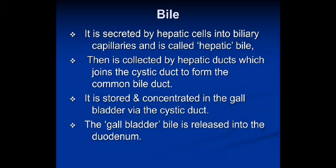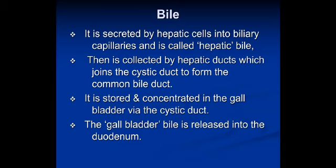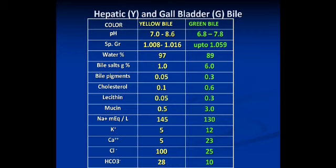Bile is secreted by hepatic cells into the biliary canaliculi and is called hepatic bile. It is then collected by hepatic ducts, which join the cystic duct to form the common bile duct. It is stored and concentrated in the gallbladder via the cystic duct, and gallbladder bile is released into the duodenum. The right and left hepatic ducts join to form the common hepatic duct, which joins with the cystic duct to form the common bile duct, which along with the pancreatic duct opens into the hepatopancreatic ampulla — guarded by the sphincter of Oddi — into the duodenum.